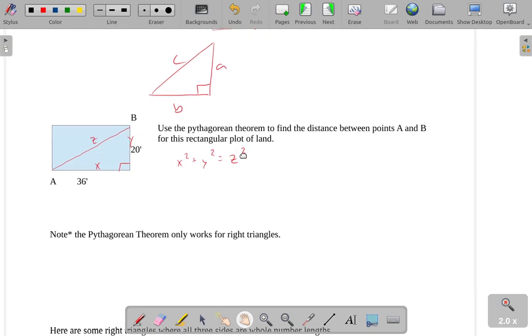I guess I don't need to call it X and Y, though, because I know they're 36 and 20. So 36 squared plus 20 squared equals Z squared.